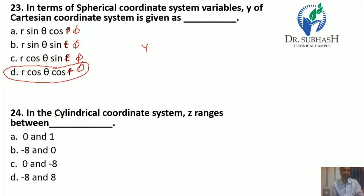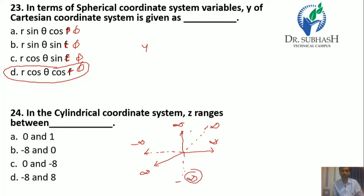Question 24: In the cylindrical coordinate system, z ranges between — we know that the z-axis can vary from minus infinity to infinity, just as the x and y axes range from minus infinity to infinity. So the range of the z-axis is minus infinity to infinity. The answer is D.